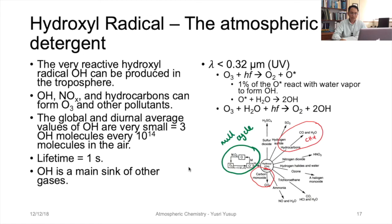The very reactive hydroxyl radical OH can be produced in the troposphere through chemical reactions with the presence of UV light. This OH reacts with nitrogen oxides and hydrocarbons in the air to form ozone molecules as well as other pollutants. The global and diurnal average values of OH are very small — about three OH molecules for every 10 to the power of 14 molecules in the air.